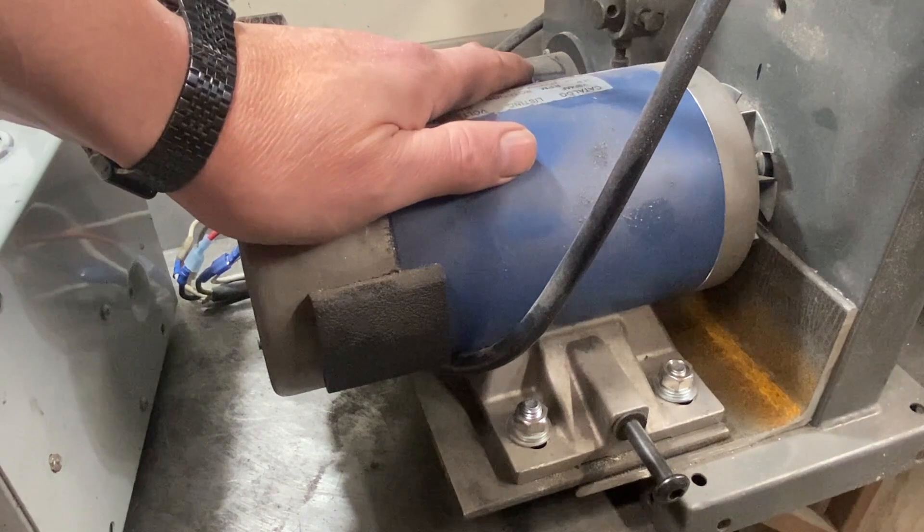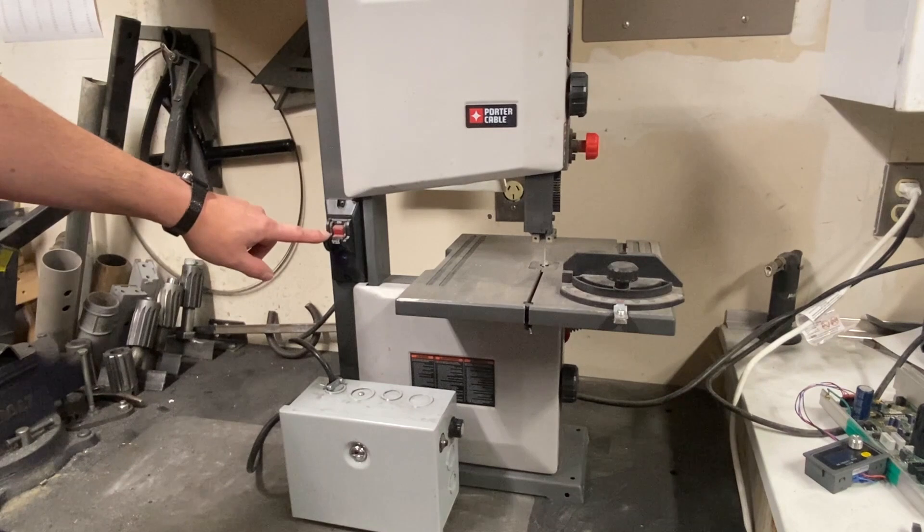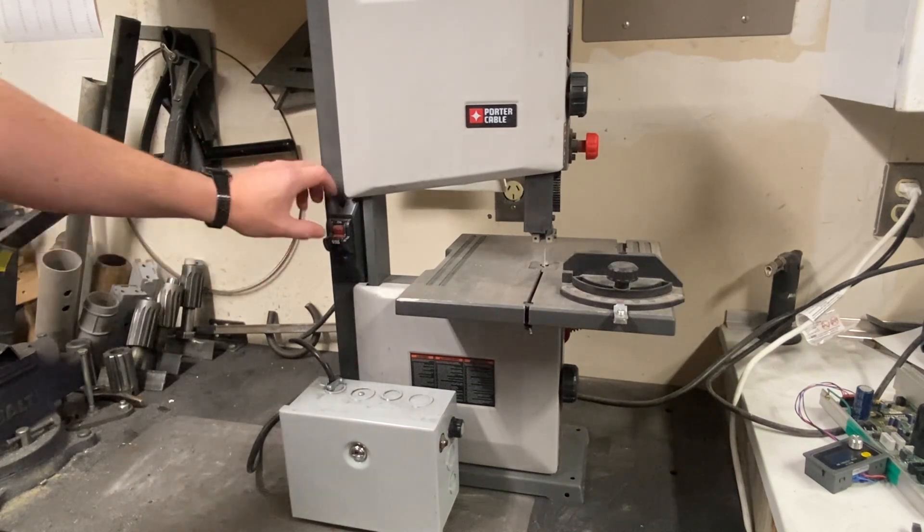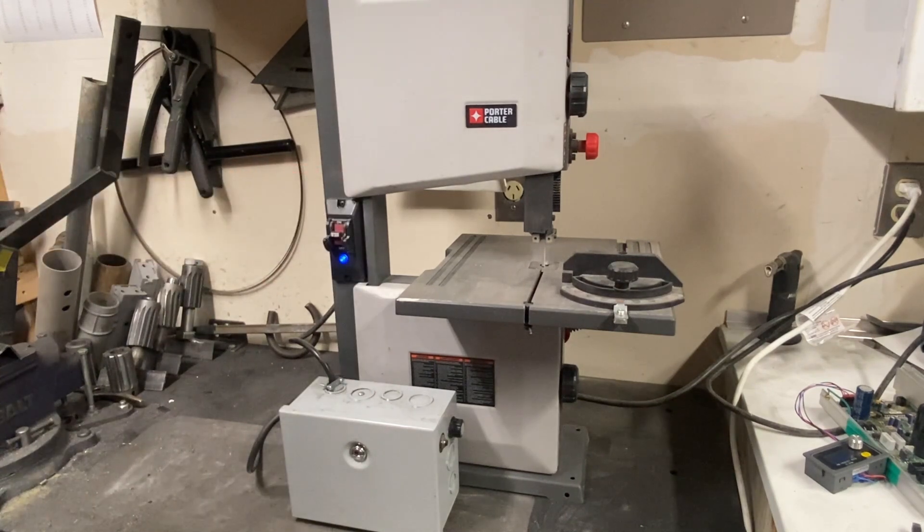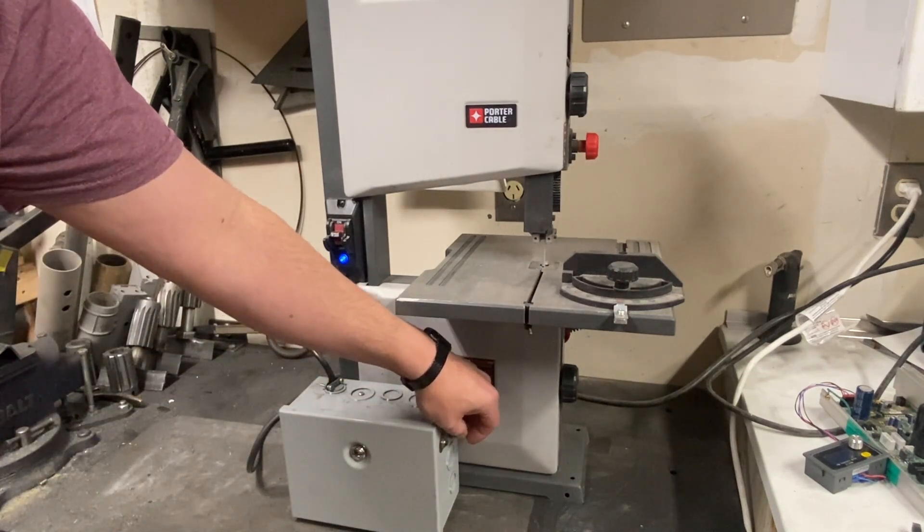And here we have the treadmill motor that I am using to drive this bandsaw. So I utilized the original power switch that came on the unit. We can turn it on. That's the slowest speed. Just turn the knob to get more speed.